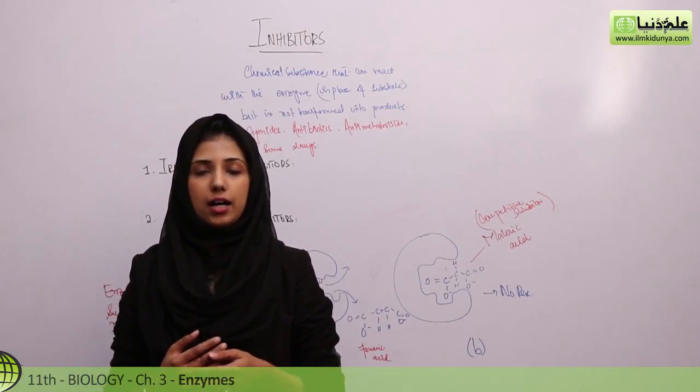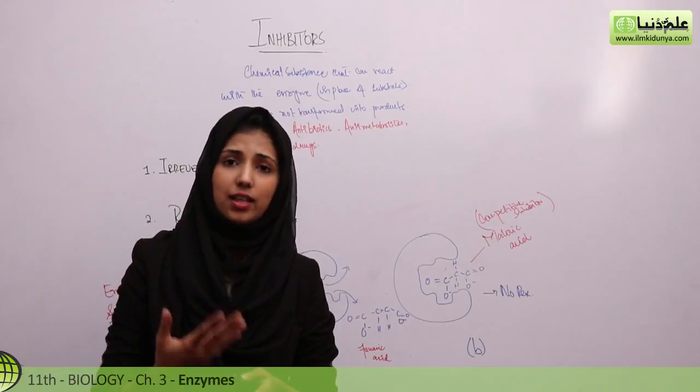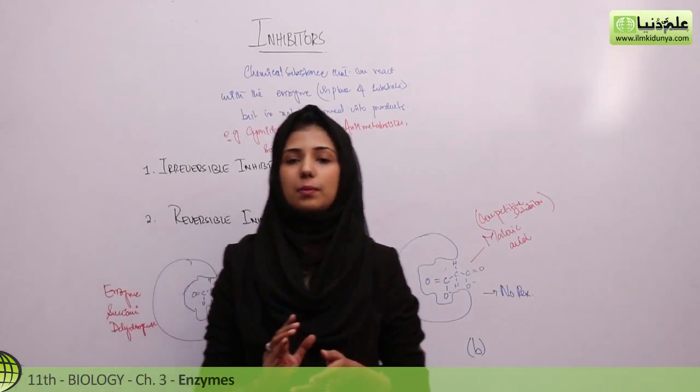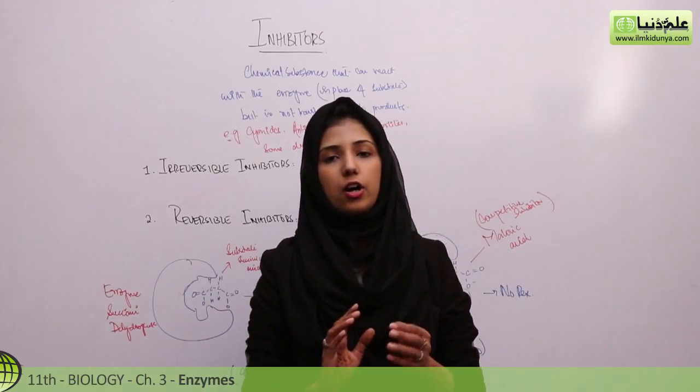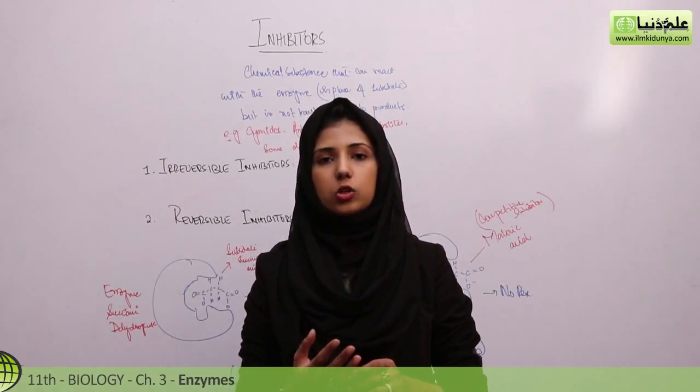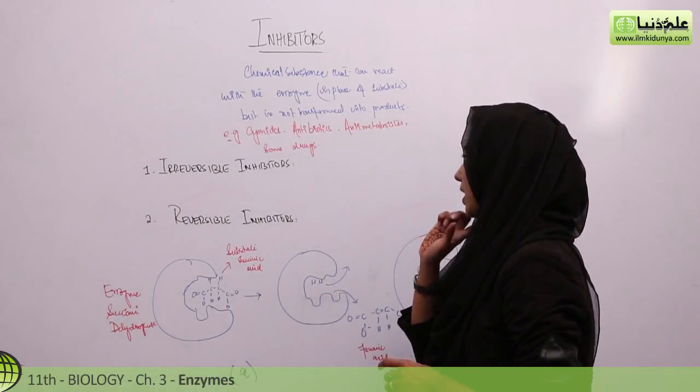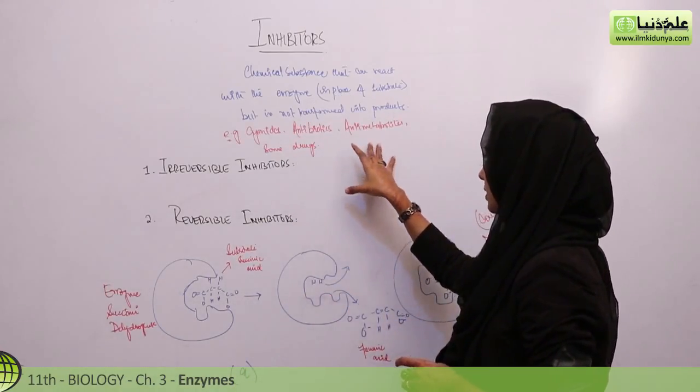On the active site, inhibitors can bind. Other than the active site, there's the allosteric site. If inhibitors join there, they will block or hinder the enzyme's activity. These are called inhibitors.